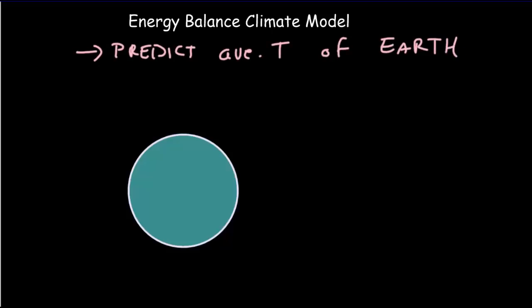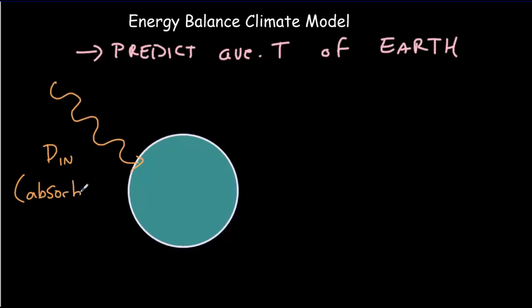The Earth and its atmosphere are sitting in outer space, and in outer space there are no molecules for conduction and convection to take place. And that means any heat transfer has to be via radiation — radiation coming from the sun. So there's some input power coming into the Earth. Let's call that P input. We're only talking about the radiation that's absorbed from the sun, not the radiation that's reflected from the Earth and its atmosphere — that just goes off into space and doesn't help to heat up the Earth.